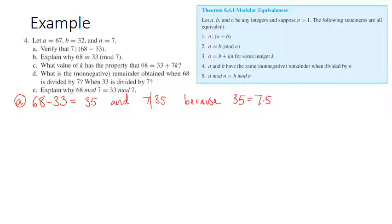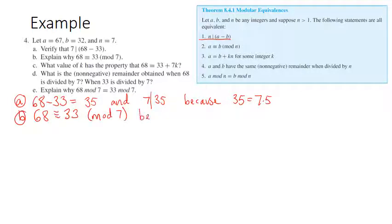That's the first statement. For part b, explain why 68 is congruent to 33 mod 7. The definition of that notation is just simply part a — this is because 7 divides 68 minus 33.